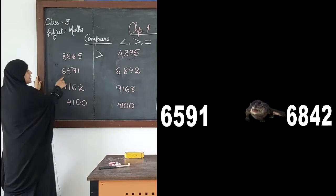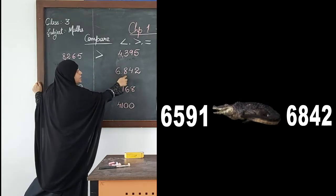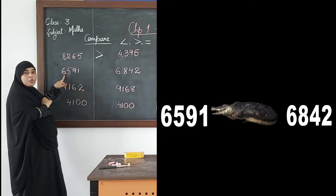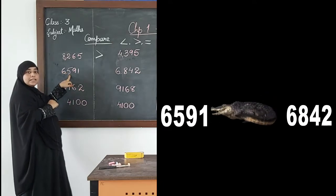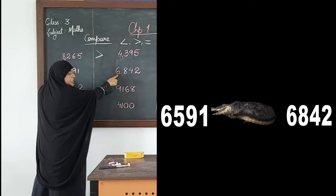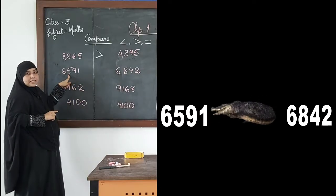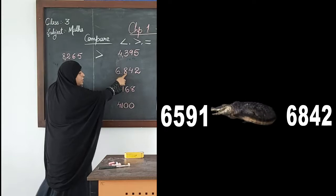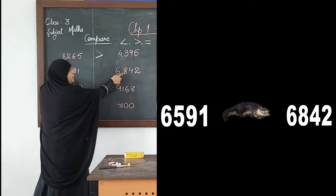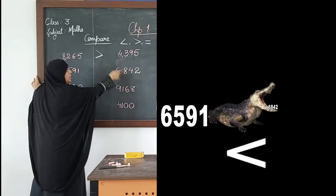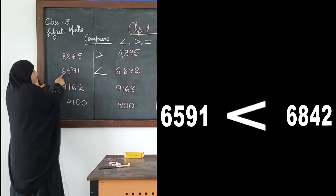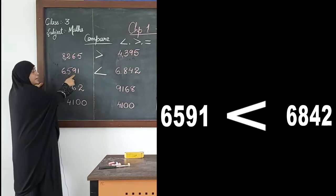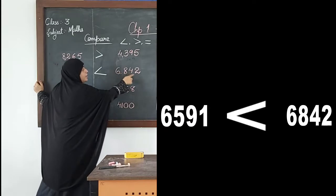Now the next pair: 6591 and 6842. First we compare the thousands place — both numbers have 6 in their thousands place. So we move on to the next place, which is the hundreds place. Here we have 500 and 800. 800 is greater in value, so 6591 is less than 6842.